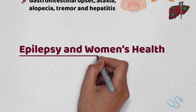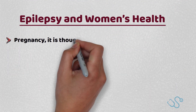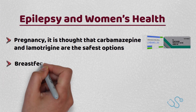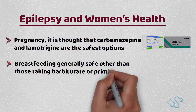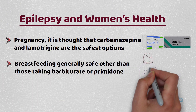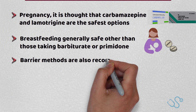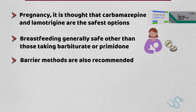With regards to pregnancy, it is thought that carbamazepine and lamotrigine are the safest options, with breastfeeding generally safe other than for those on barbiturates or primidone antiepileptics. Regarding contraception, due to the pharmacokinetics of many antiepileptic drugs, some contraceptives aren't as effective as they should be, and thus barrier methods like condoms are also recommended.